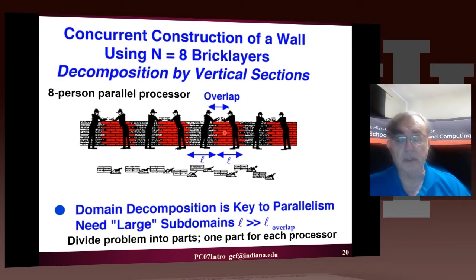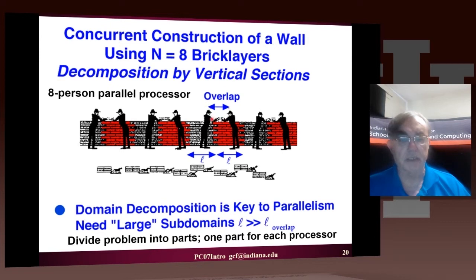An important issue with having multiple masons is that they overlap. Within some distance measured by the length of their arm, there are overlap issues and the masons have to coordinate — that's the communication necessary. The masons communicate with each other at the boundaries of the wall, and the problem of how much that communication costs is measured by the ratio of the overlap region to the actual length of the wall.